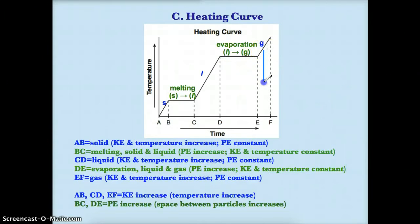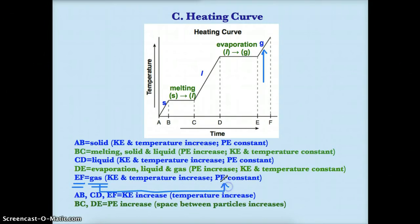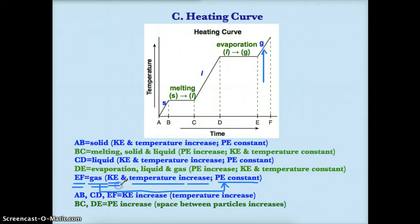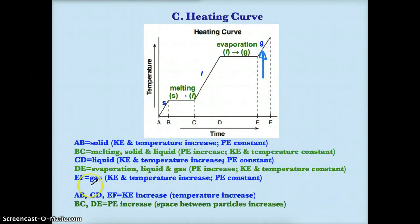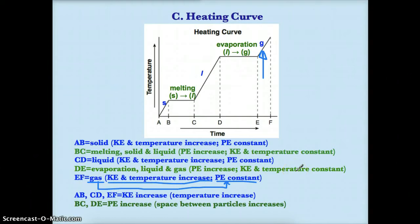EF is the third and final positive sloping line on any heating curve — it is the gas phase. Since you only have one phase gas, the potential energy is constant because the phase is not changing. The temperature is increasing, so kinetic energy increases as well. In short: the third positive slope is gas, potential energy is constant, and kinetic energy and temperature increase.